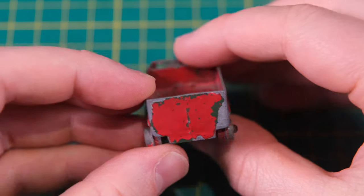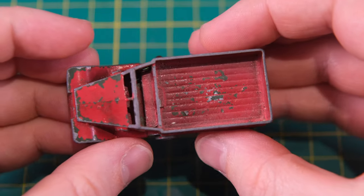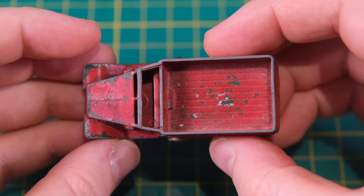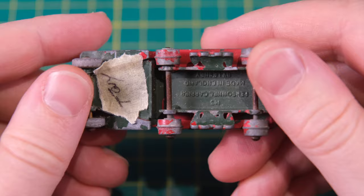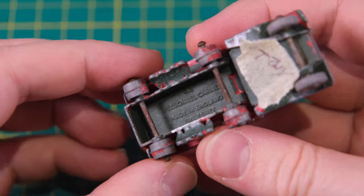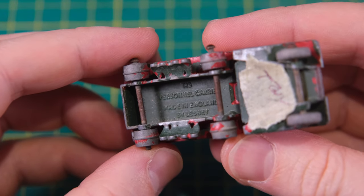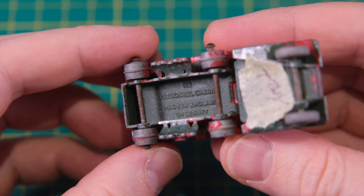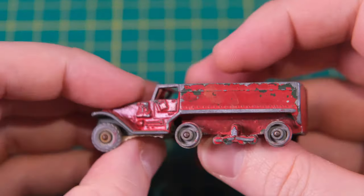These were produced by Lesney from 1958 and were in the 1-75 range all the way through to 1967. This red overpainted casting is another of many sent in to me by long-time channel member Tony. It is missing the grey rubber tracks which are absent from most played with examples.